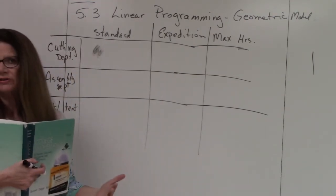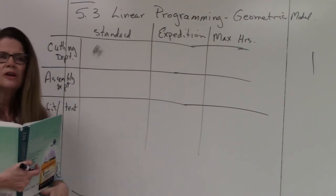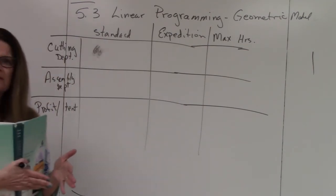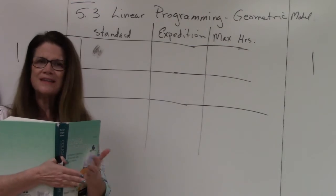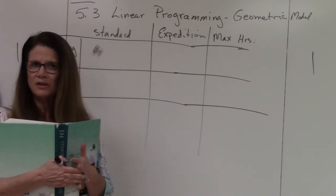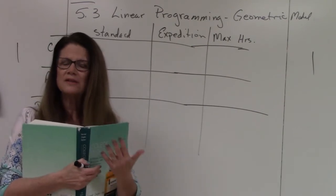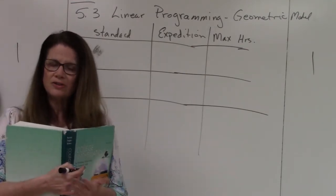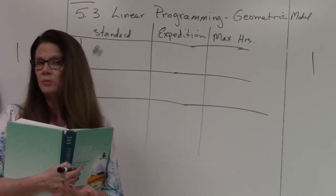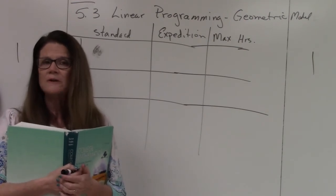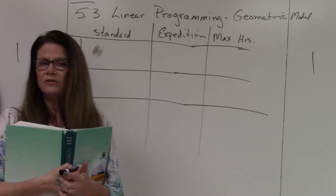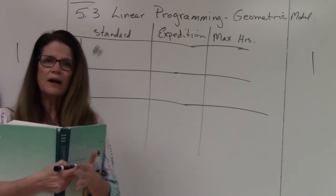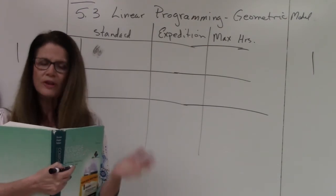The added aspect is we're going to come up with an objective function where we maximize or minimize our values. This is an example of a company that produces two different types of tents - one is the standard type and the other is expedition type. We want to figure out what the maximum profit is.